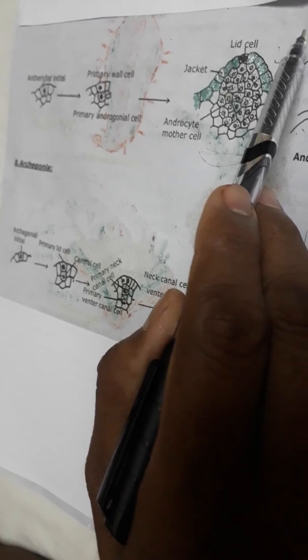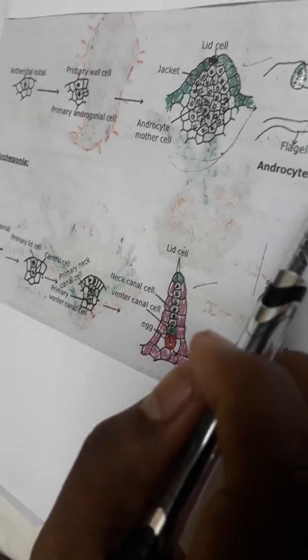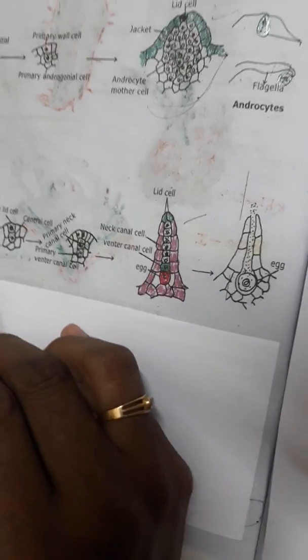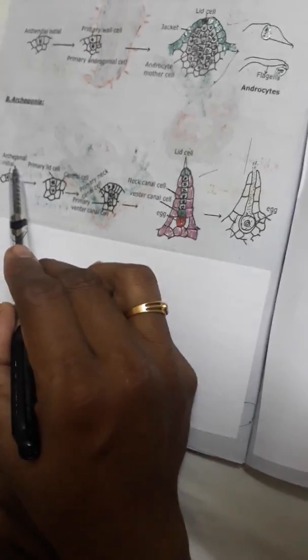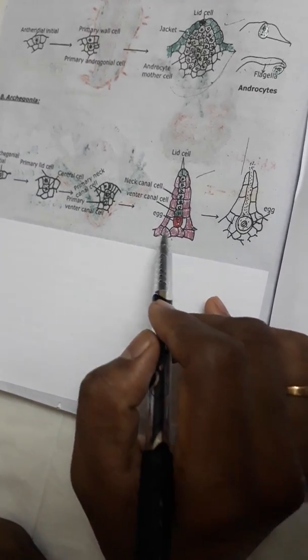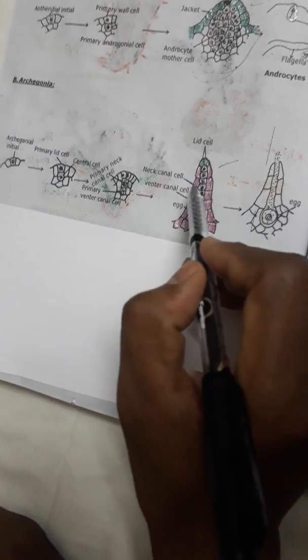When matured, the lid cells are opened. They are released into surrounding water. They can swim. Then, archegonium. The entire archegonium originates from archegonial initial cell. Here, the archegonium is embedded in gametophytic tissue.